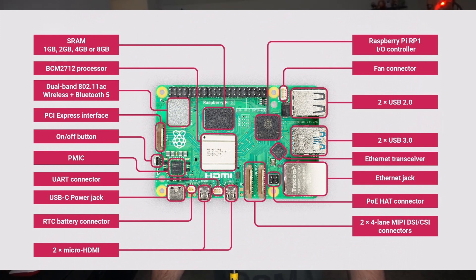Reading through the specs: we have a Broadcom BCM2712 2.4GHz quad-core 64-bit ARM Cortex-A76 CPU — about two to three times faster than the Raspberry Pi 4. We also have a much faster GPU: a VideoCore VII GPU supporting OpenGL ES 3.1 and Vulkan 1.2. It can support dual 4K 60Hz HDMI display output with HDR support.